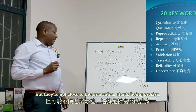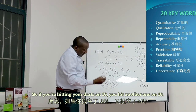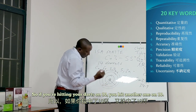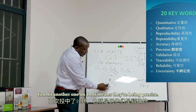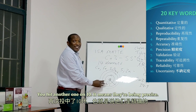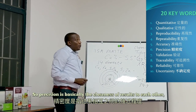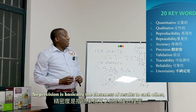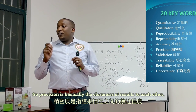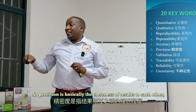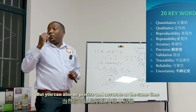So if you're throwing darts and hit 10, then another on 10, then another on 10, they are being precise — but are you close to the true value? No. Precision is basically closeness of results to each other but not necessarily to the true value. However, you can also be precise and accurate at the same time.